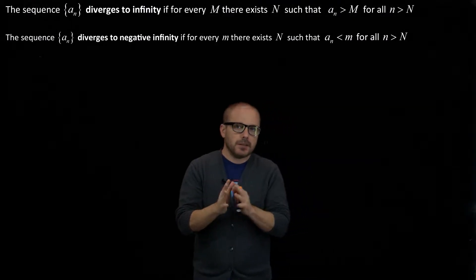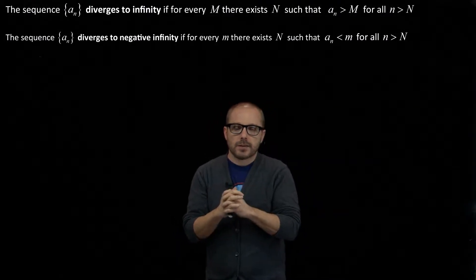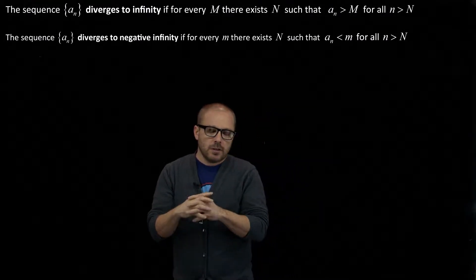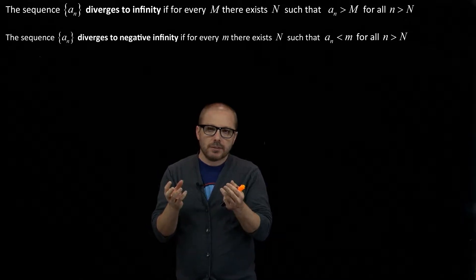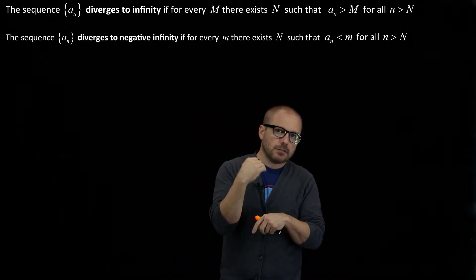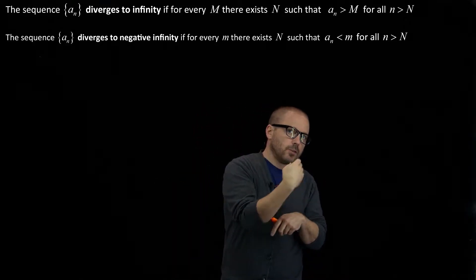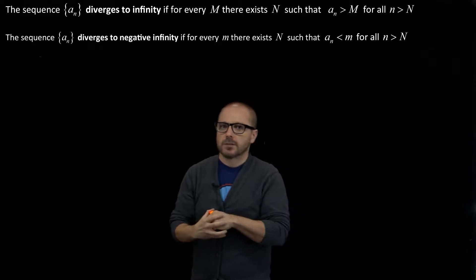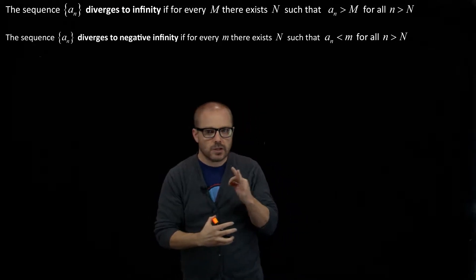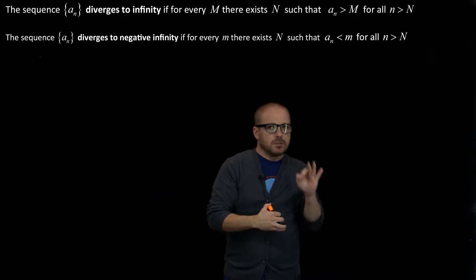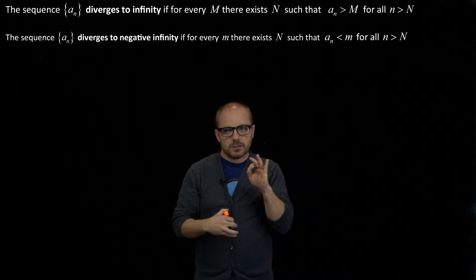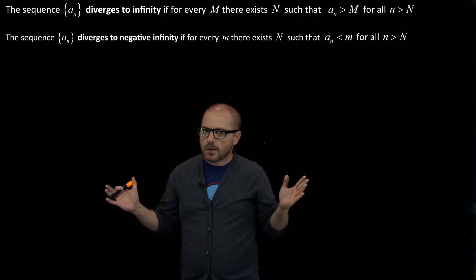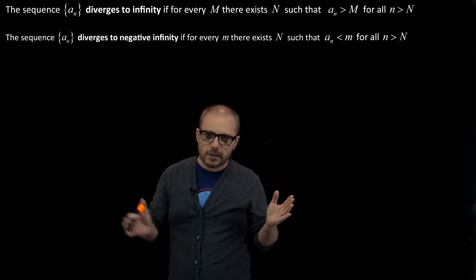We defined what it means for a sequence to converge. Intuitively, we just mean that out at infinity, as you go farther and farther out in that list of numbers, the list is approaching a particular value. That was convergence. Divergence means you're not approaching any particular value.